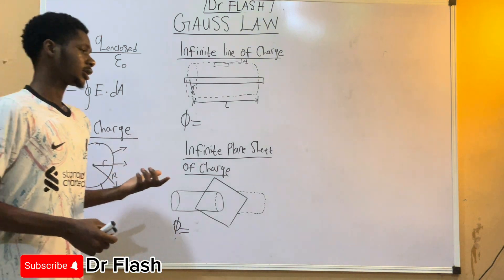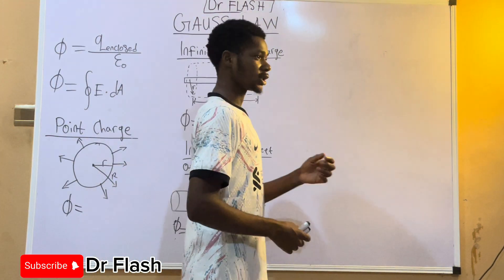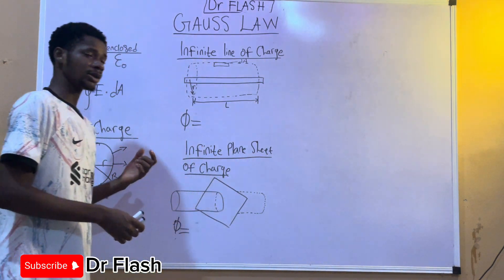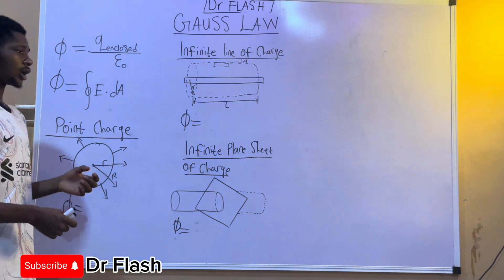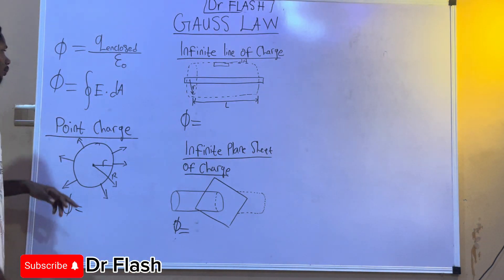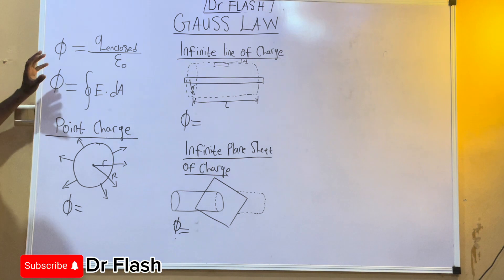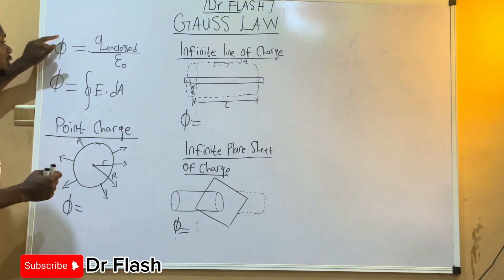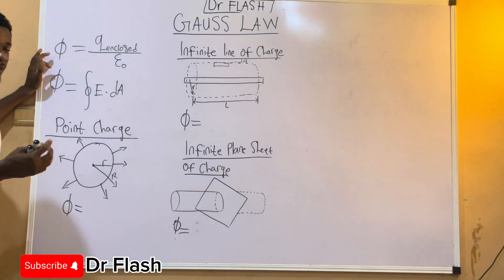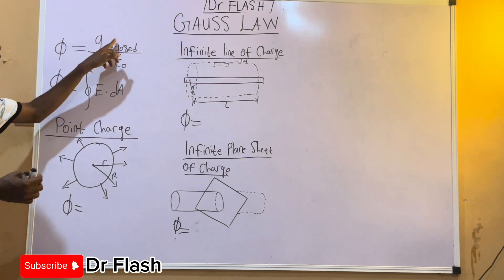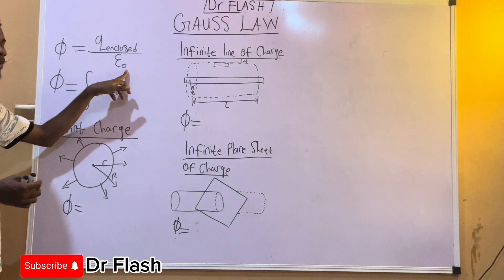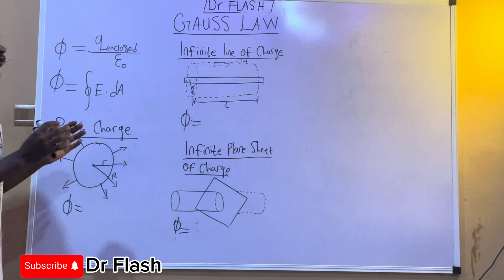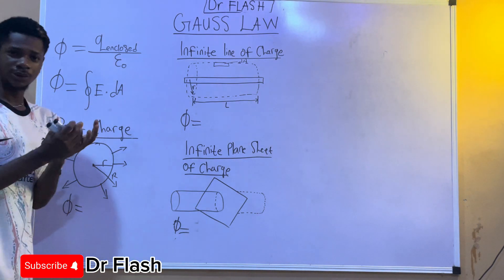Do not mistake when you're asked the analog of Gauss's Law — that is different from when you are asked the alternative. For this case, the alternative is Coulomb's Law. Gauss's Law simply states that the net electric flux through a closed surface is equal to the enclosed charge divided by the permittivity of free space.